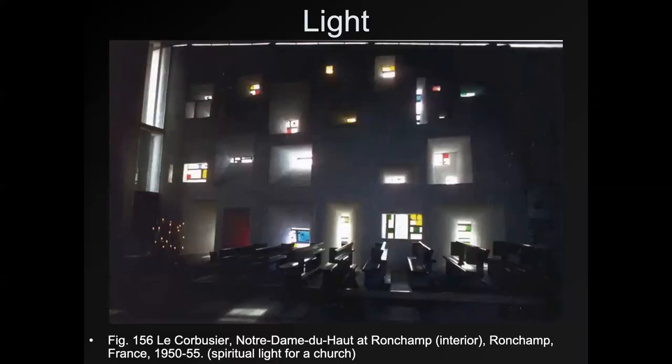Looking at light, we're looking at Le Corbusier and his church called Notre-Dame du Haut-Ronchamp. The idea of light as a subject comes from Gothic cathedrals, starting in the 12th century. Le Corbusier, even though he's a modernist artist working in the first half of the 20th century, when he was commissioned to make a church, he used light as a subject. So when you're inside this church, you can see light that has a spiritual meaning to it.